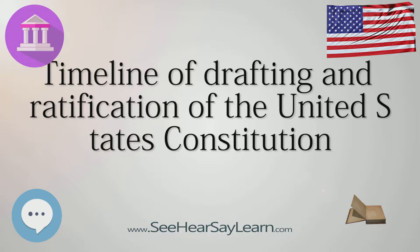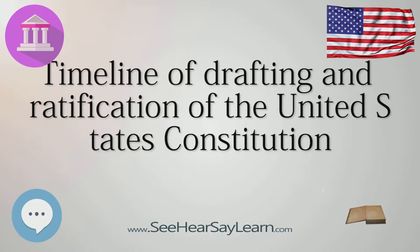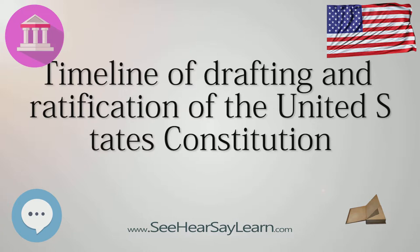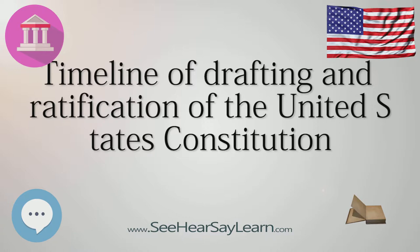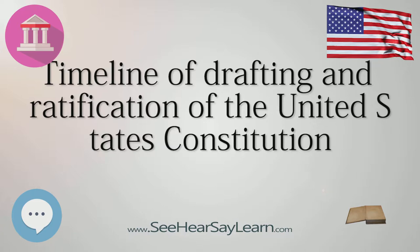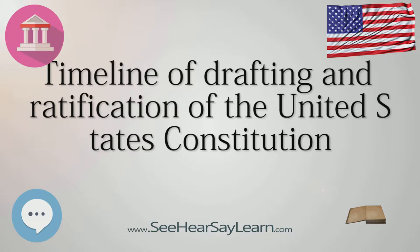September 8: The Committee of Style and Arrangement, composed of Alexander Hamilton, William Johnson, Rufus King, James Madison, and Gouverneur Morris, is selected to distill a final draft constitution from the 23 approved articles. September 12: The Committee presents the completed final draft to the convention. The 23 articles have been reorganized into a cohesive document containing seven articles, a preamble, and a closing endorsement, of which Gouverneur Morris was the primary author.